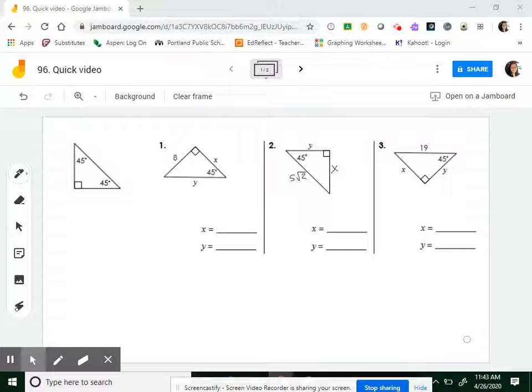So remember the sides are A, A, A root 2. The two legs are A and the side across from the right angle is A root 2. Number one is the easy type because they're giving you your A. So always label A, A, hypotenuse A root 2. They're giving you that A is 8, so that means X is 8 and Y is 8 root 2. Done.